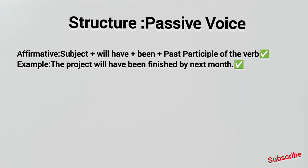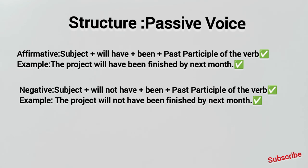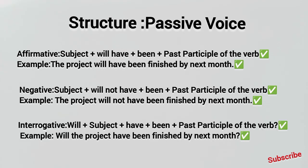For passive negative: subject plus 'will not have been' plus past participle. Example: 'The project will not have been finished by next month' — meaning the project will not be completed by next month. For the passive interrogative: 'Will the project have been finished by next month?'